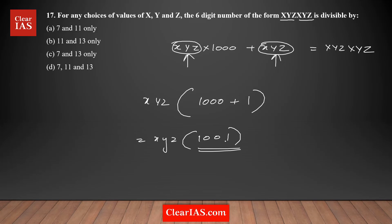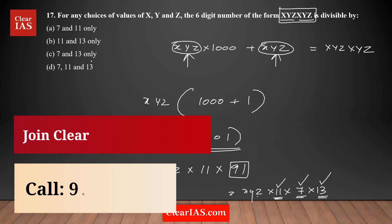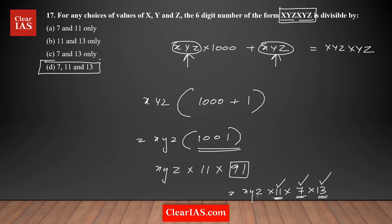1001 is a multiple of 11: 1001 = 11 × 91. And 91 = 7 × 13. So the full factorization is xyz × 11 × 7 × 13. This means xyzxyz is divisible by 7, 11, and 13 for any values of x, y, z. Therefore, the answer is option D.